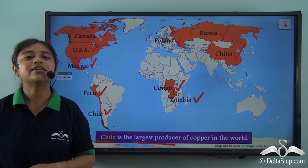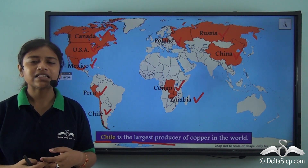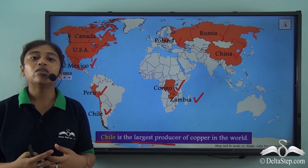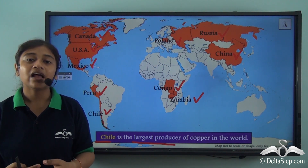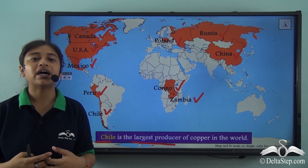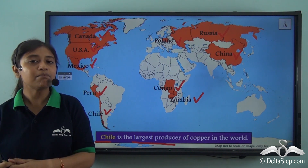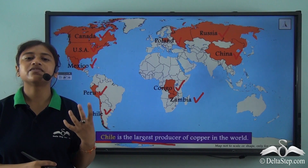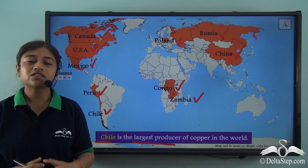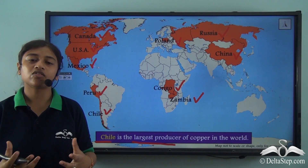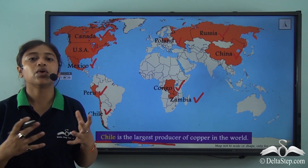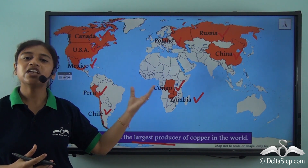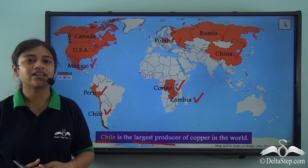In this lesson, we were able to understand the importance of minerals and we saw how minerals are unevenly distributed in a particular region. This uneven distribution helps us understand that minerals need to be utilized wisely — some places have higher concentrations of certain minerals while others lack sufficient reserves. We looked at important metallic minerals, understood their uses, and saw how they are distributed across the world and in India. We will continue our discussion on the distribution of metallic and non-metallic minerals and their uses in our next lesson.